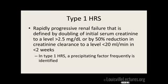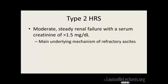Type 1 usually has a precipitating factor — paracentesis, infection, GI bleed — something that led to hepatorenal syndrome. Then there's hepatorenal type 2, which is more indolent, and can look like chronic kidney disease where creatinine is slowly creeping up: 0.5, 0.7, now 1.5 or higher. You kind of stay around 1.5 and slowly progress. This is usually caused by refractory ascites.